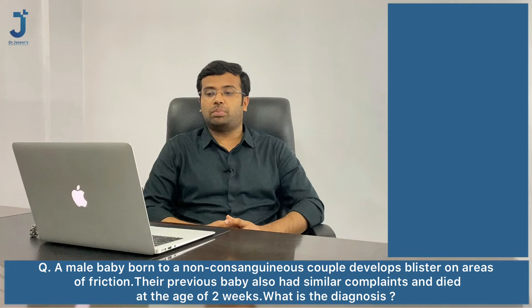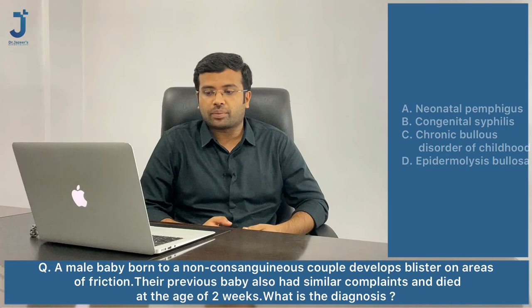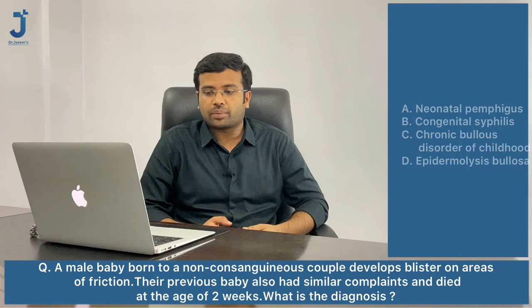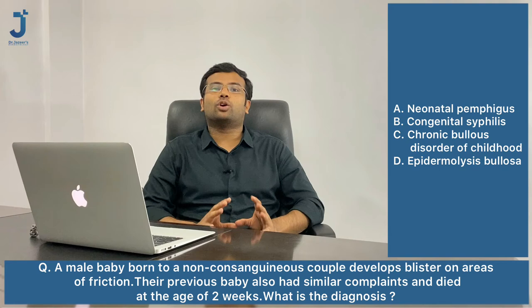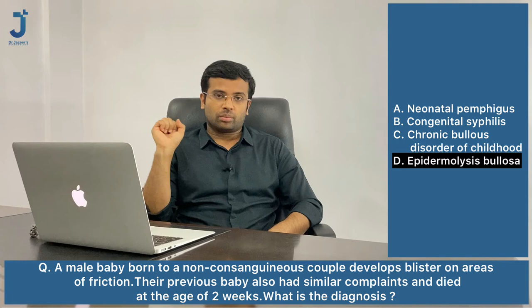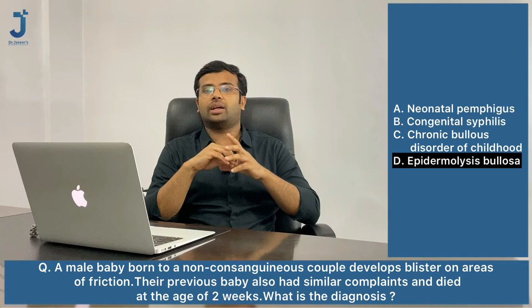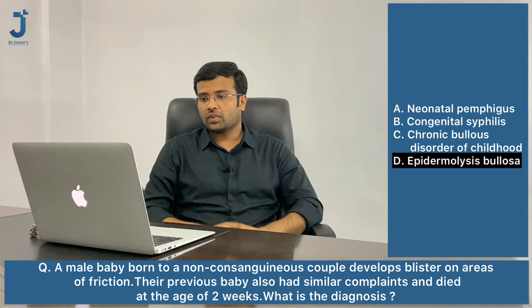Next question: a male born to a non-consanguineous couple develops blisters at areas of friction. Their previous baby also had a similar complaint and died at the age of two weeks. What is the diagnosis? Options are neonatal pemphigus, congenital syphilis, CBDC, and epidermolysis bullosa. This is a mechanobullous disease — bulla at the site of friction. The right answer is epidermolysis bullosa, a congenital mechanobullous disease with subtypes like EB simplex, junctional EB, and dystrophic EB.